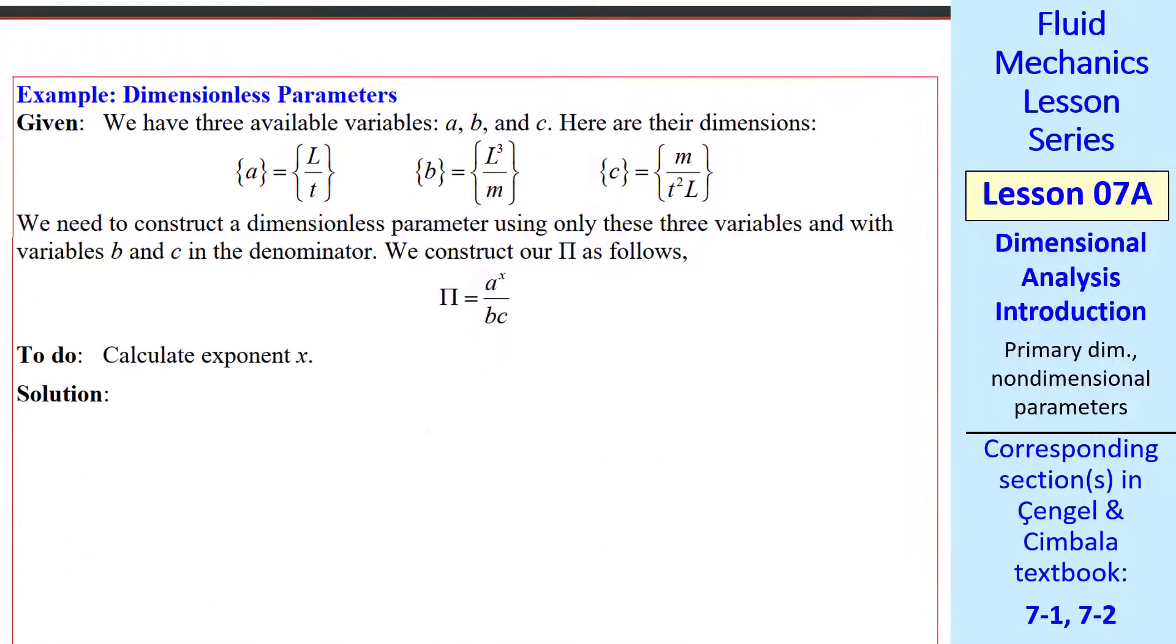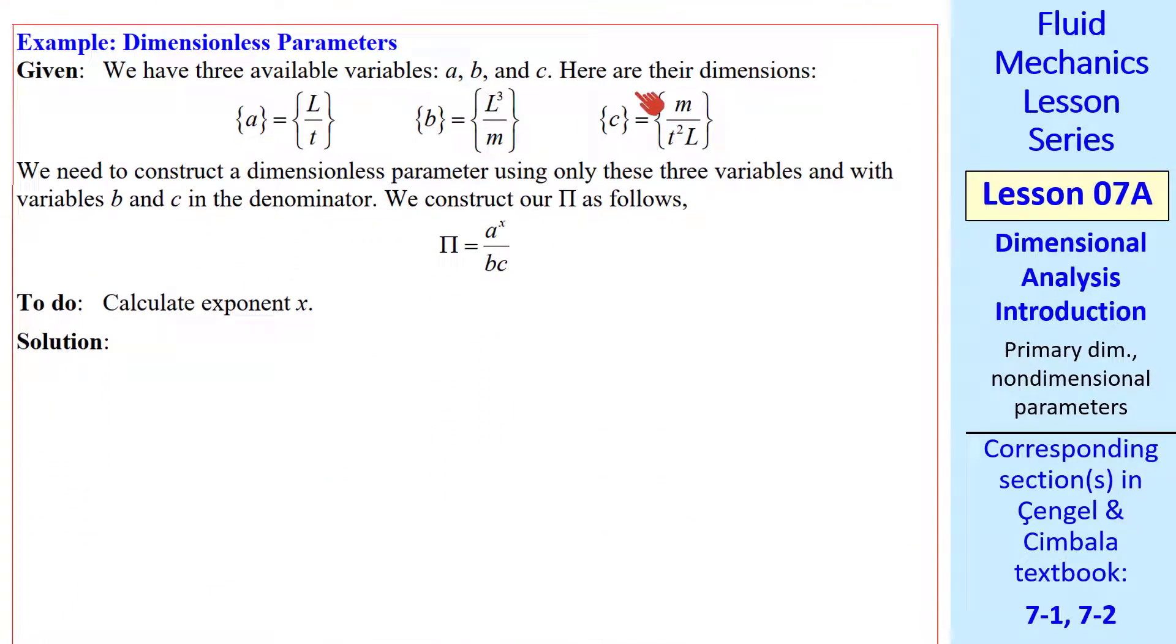Let's do an example. Suppose we have three variables, A, B, and C, with these dimensions. We need to construct a dimensionless parameter using only these three variables, and we want to have B and C in the denominator. In other words, our pi is A to some unknown exponent divided by B and C. We need to calculate this exponent. What we'll do is force the dimensions of pi to be 1, since it's a dimensionless parameter. Again, that means that the exponents of all the primary dimensions are 0. In this problem, we only have M, L, and T. We don't have temperature or any of the other primary dimensions.